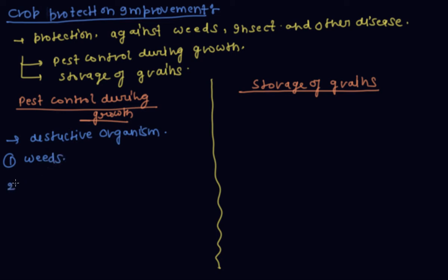Destructive organisms include: first, weeds; second, insects; third, pathogens.